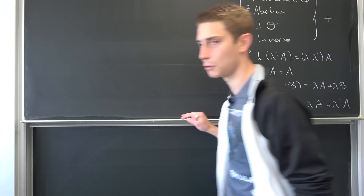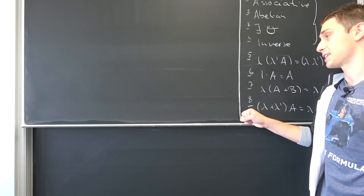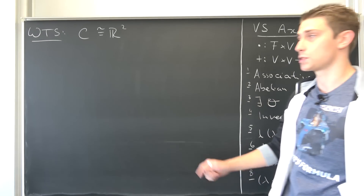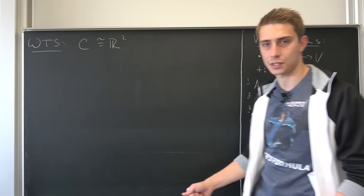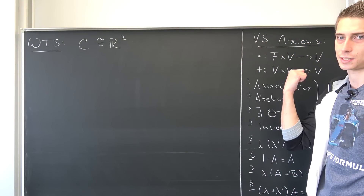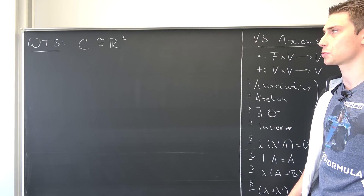With all of that out of the way, we can get started. C forms a vector space — you can prove this formally by checking all of those properties. It's really straightforward.